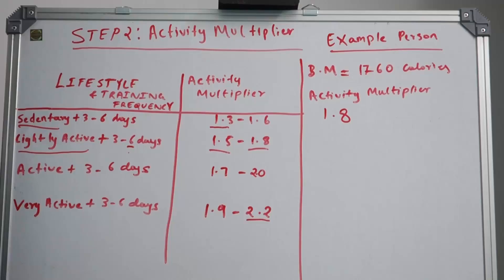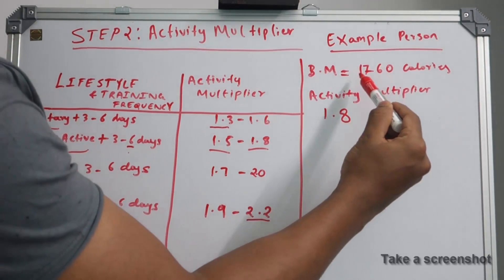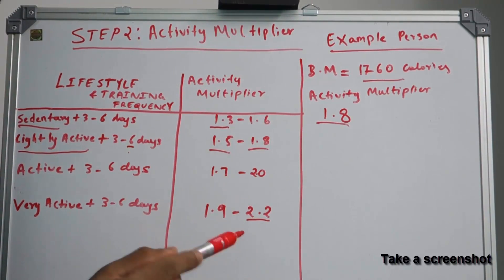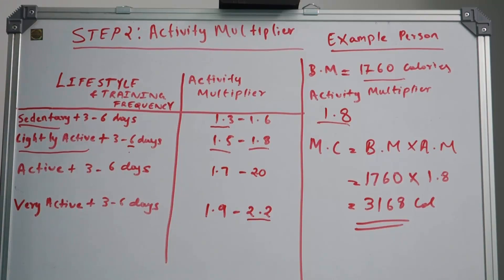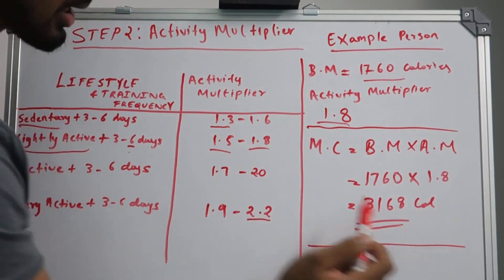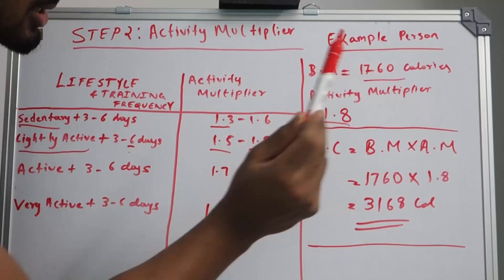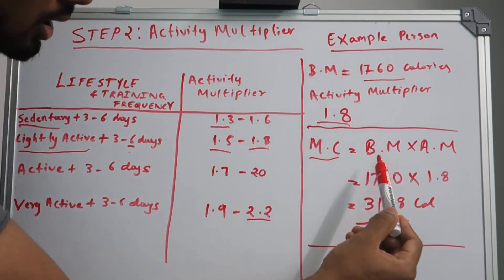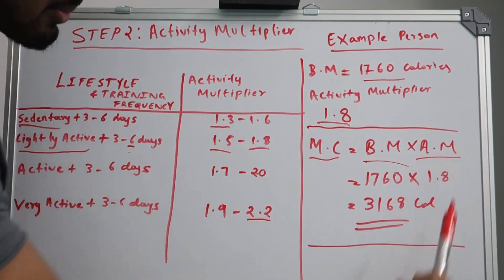You have chosen your activity multiplier as well as baseline multiplier. All you have to do is multiply your baseline multiplier with your activity multiplier and that will be your maintenance calories. This is the final step.